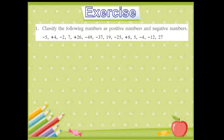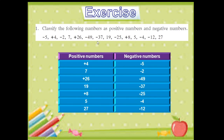Exercise from the textbook, problem set 4: classify the following numbers as positive and negative numbers. We make a table with positive and negative columns. Numbers with a minus sign go under negative, and numbers with a plus sign or no sign go under positive. From the given numbers — minus 5, plus 4, minus 2, 7, plus 26, minus 49, minus 37, 19, minus 25, plus 8, 5, minus 4, minus 12, 27 — positive numbers are: plus 4, 7, 26, 19, plus 8, 5, 27. Negative numbers are: minus 5, minus 2, minus 49, minus 37, minus 25, minus 4, minus 12.